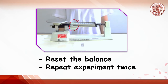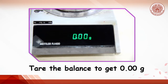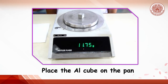Take all weights back to zero and repeat the experiment twice, then calculate the average weight of the aluminum cube. For the electrical balance, first make sure the display shows 0.00 grams; if not, press the tare button. Place the aluminum cube on the center of the pan, and record the weight after the G indicator appears on the display.